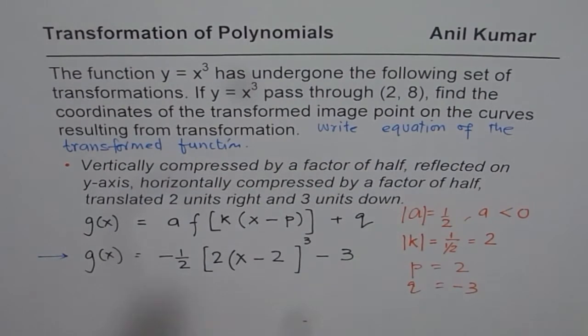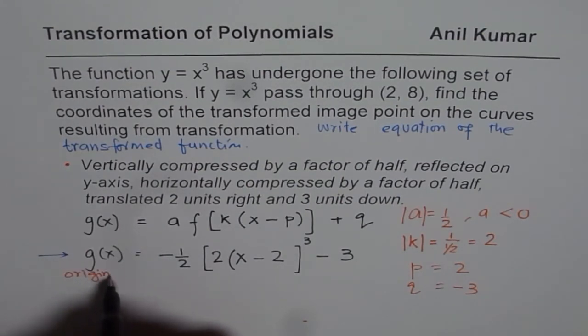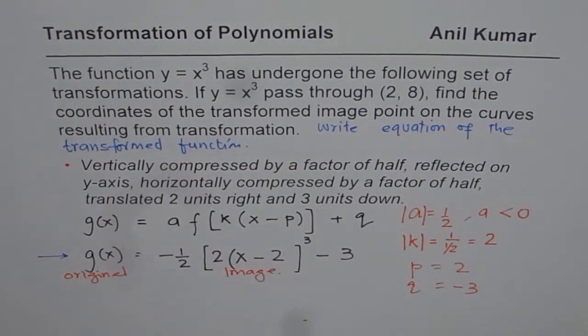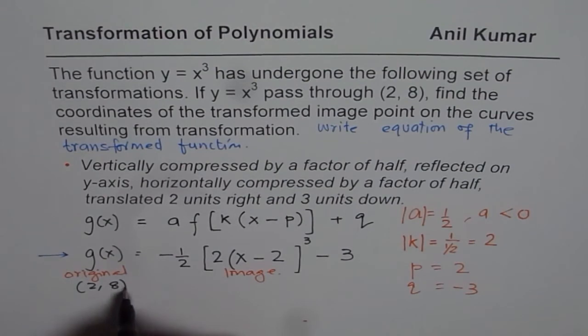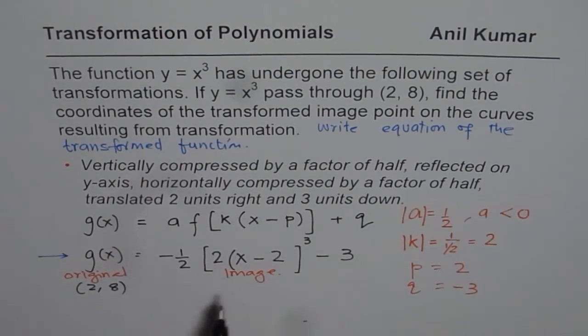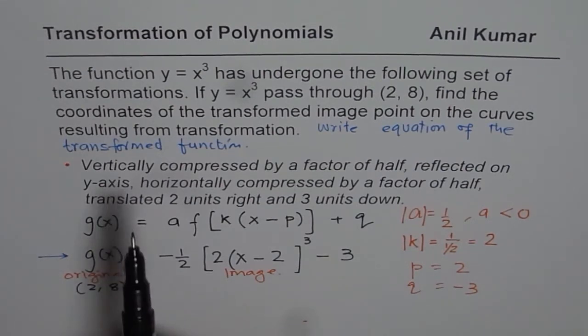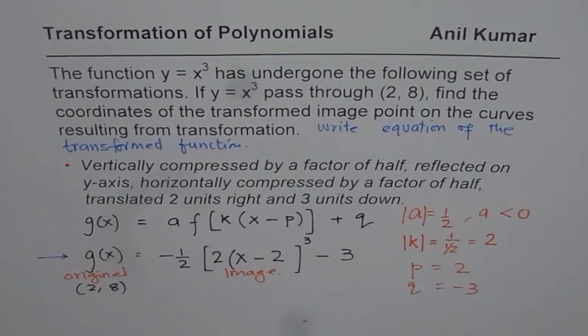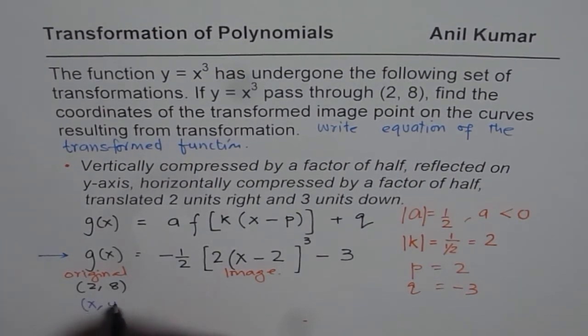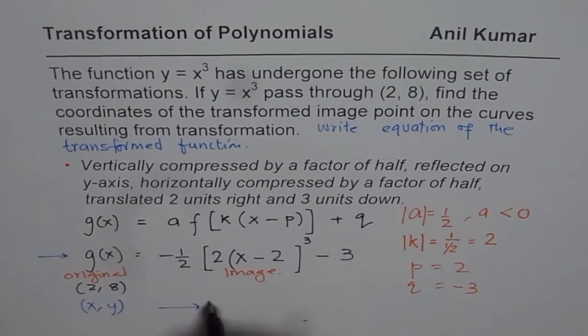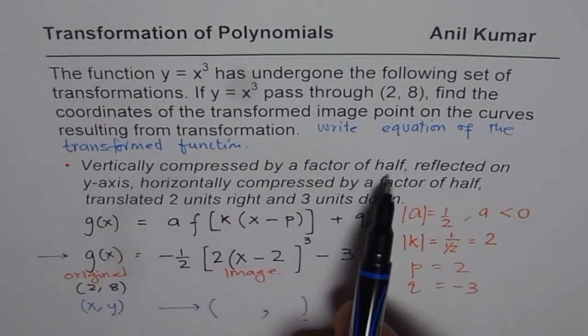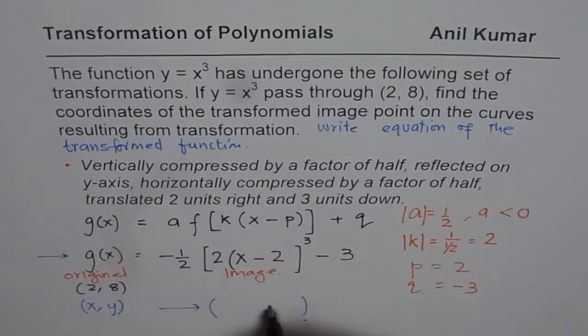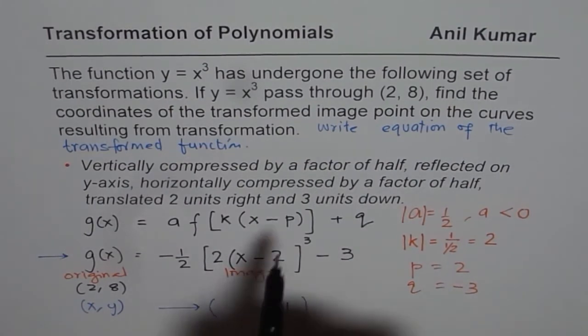It says that on the original function, the point is (2, 8). So the original is (2, 8). Now what happens to these coordinates to get the point on the image? This is described here. Vertically compressed by a factor of half, reflected on y-axis. That means that 8, which is the y value — let me write these coordinates as x and y. As far as y is concerned, vertically compressed, that means you divide it by a factor of half, reflected on y. Combining these two, we get minus half times original y value.